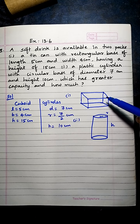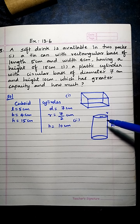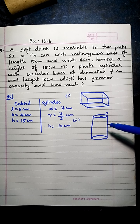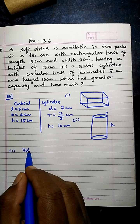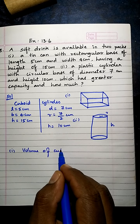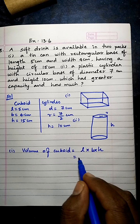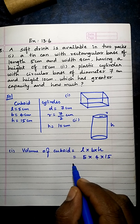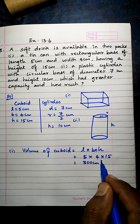The question asks which has greater capacity and by how much. Capacity means volume. Let's find the volume of the cuboid first. Volume of cuboid formula = length × breadth × height = 5 × 4 × 15 = 300 cm³.